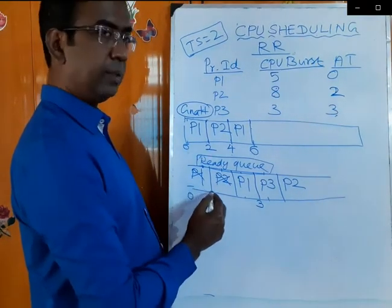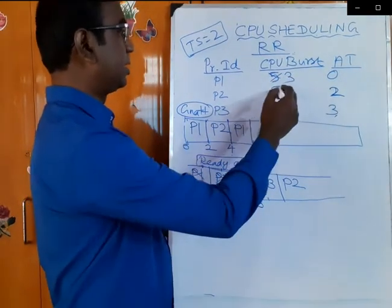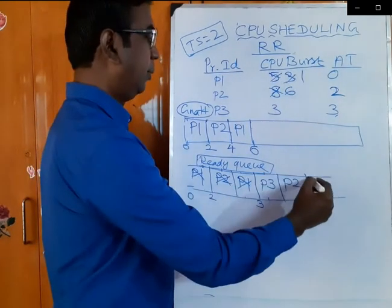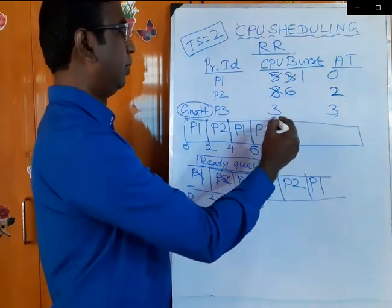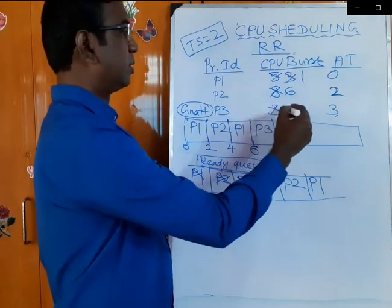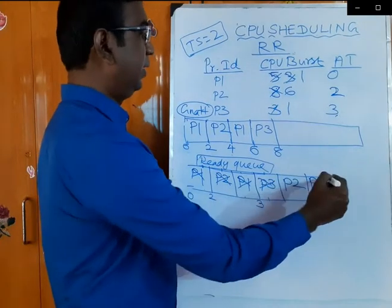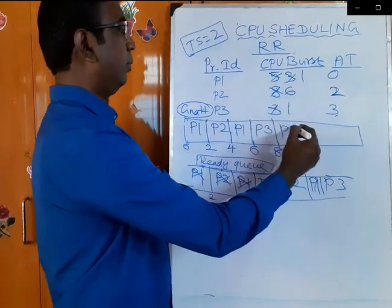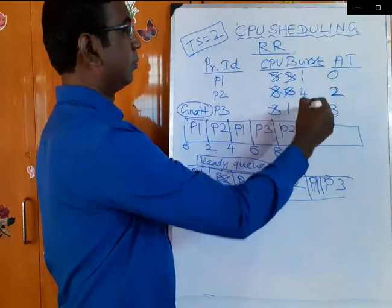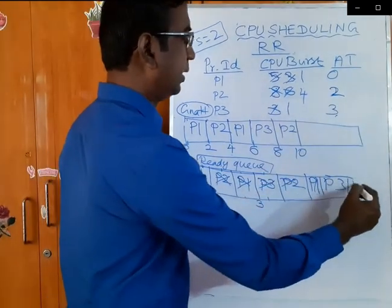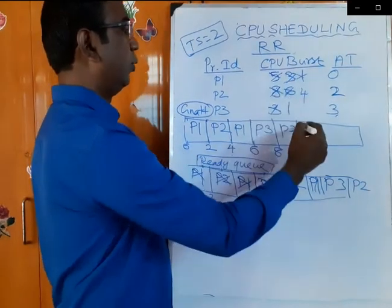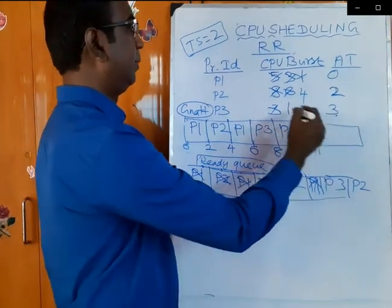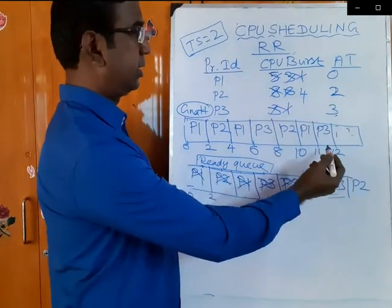P1 has already been in the CPU for two seconds, so the leftover for P1 is three. P2's leftover is six. Now P1 is entering again so leftover is two, then P1 will be placed at the end of the queue. P3 enters the CPU and executes for two seconds, leftover is one. Then P3 is placed at end of queue. P1 enters, requires only one second, so P1 completes at time 11.